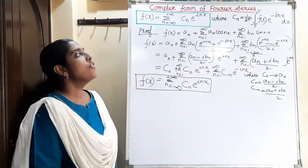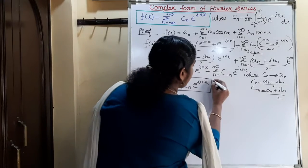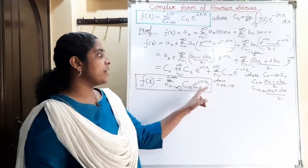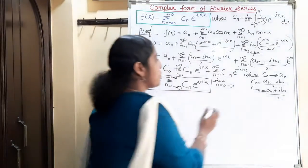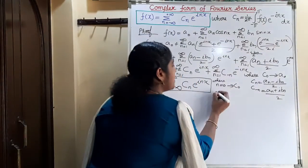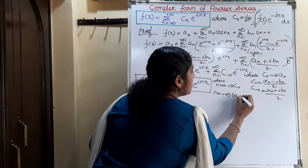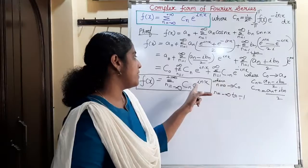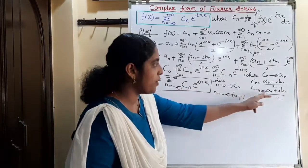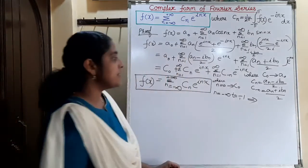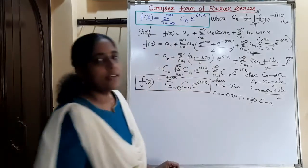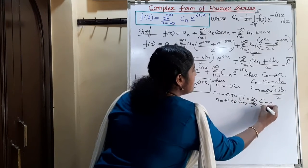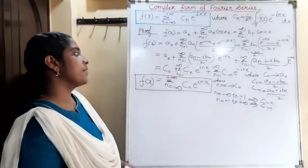To see how this works: when n = 0, the term becomes c0·e^0 = c0, matching the a0 term. When n ranges from -∞ to -1, it gives the c_{-n}·e^(-inx) terms. When n ranges from +1 to +∞, it gives the cn·e^(inx) terms corresponding to (an - ibn)/2.